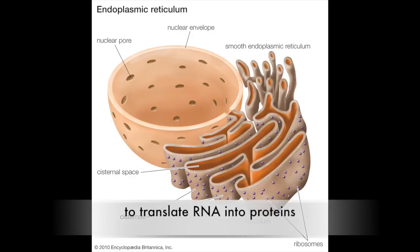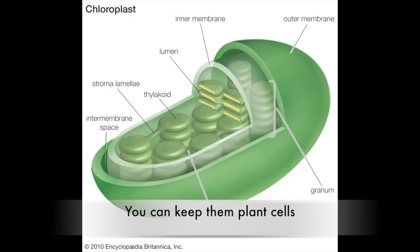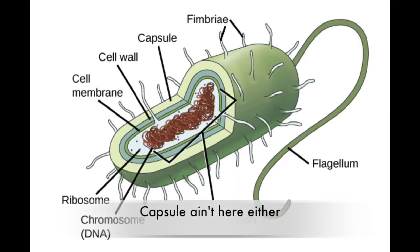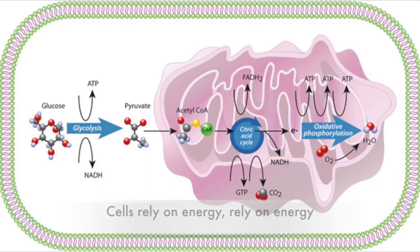To translate RNA into proteins. Proteins modified by Golgi, then exported into vesicles. No chloroplasts in here, you can keep them plant cells. But I always have mitochondria to turn ATP into energy. ATP into energy, cells rely on energy.